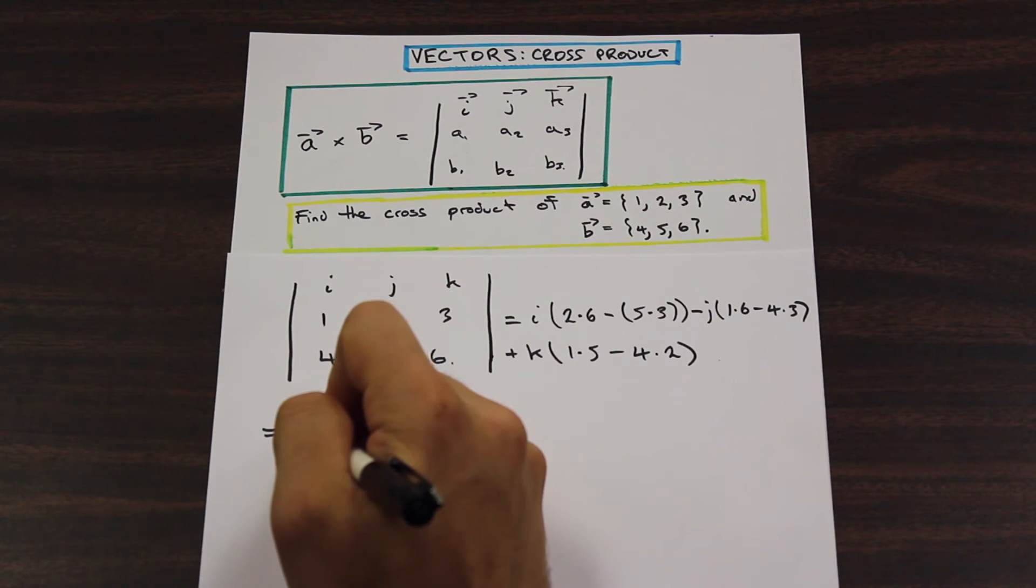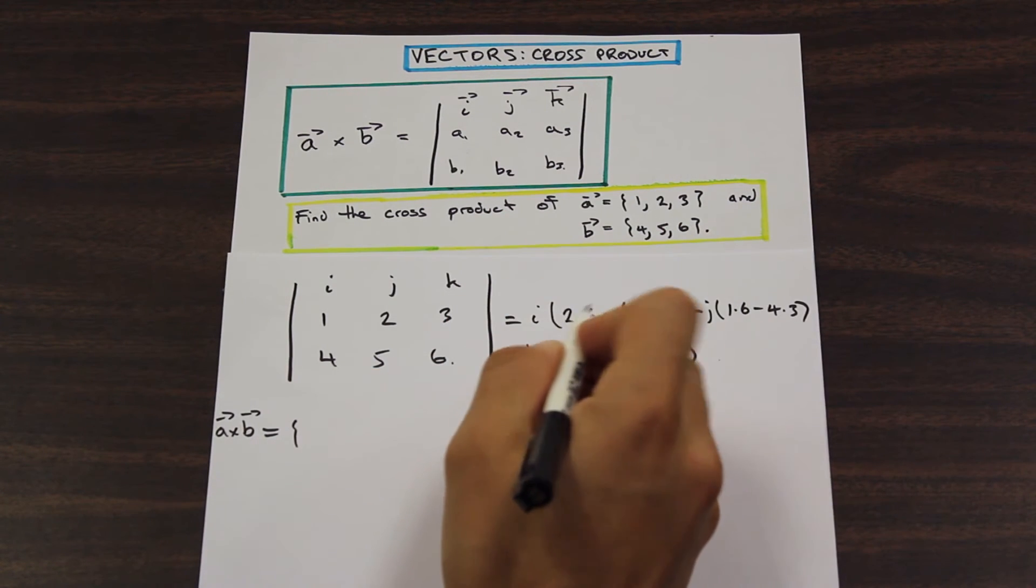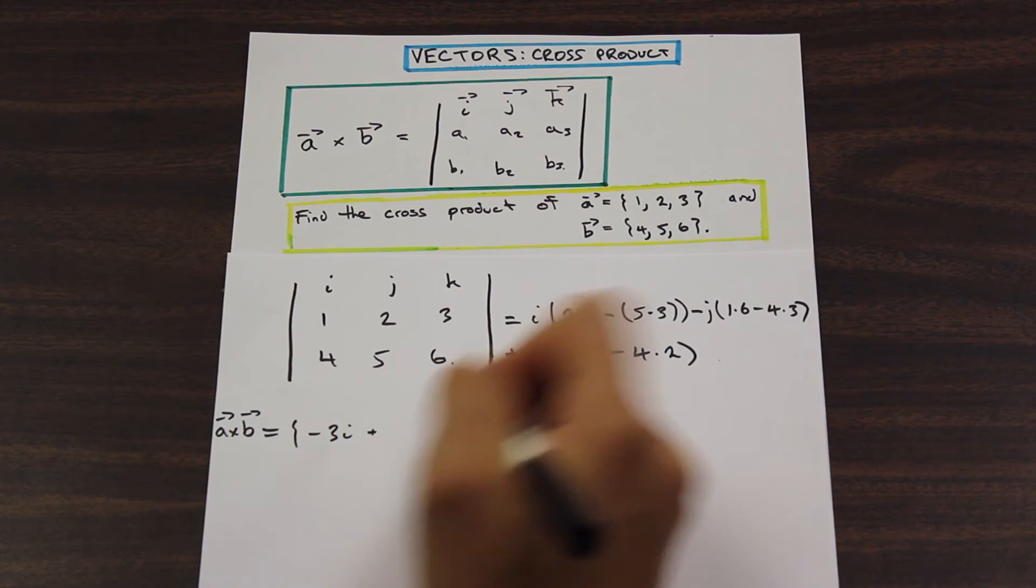So we have 12 minus 15, that is going to be, is equal to, so we have the I component here, which is negative three I.